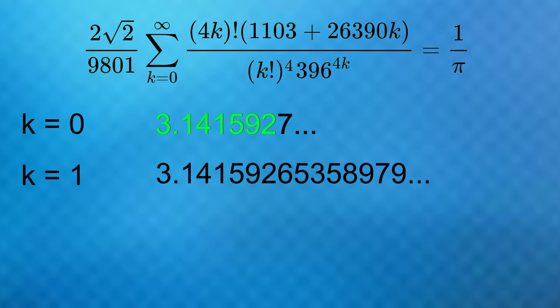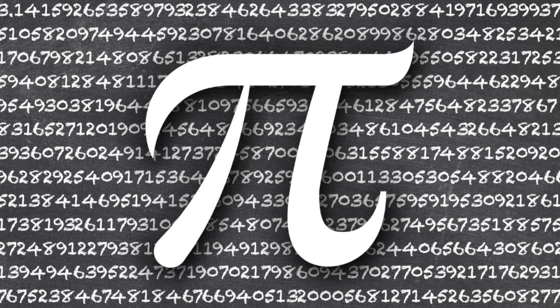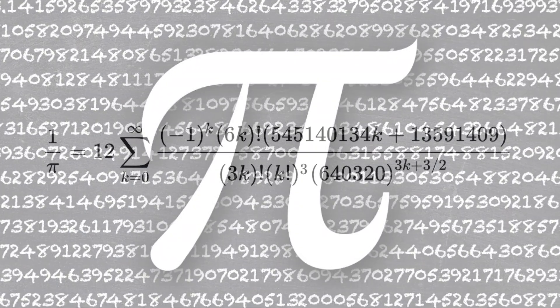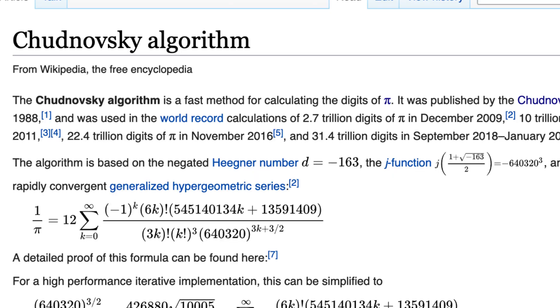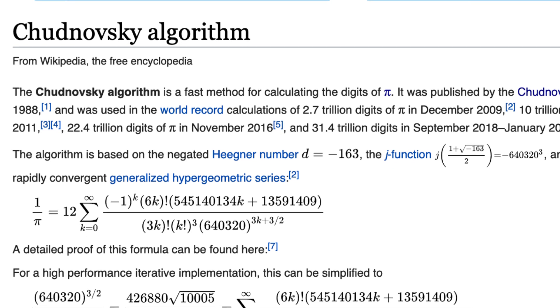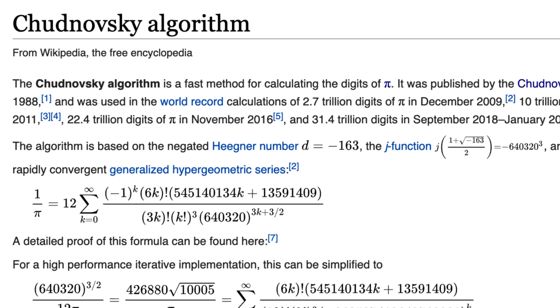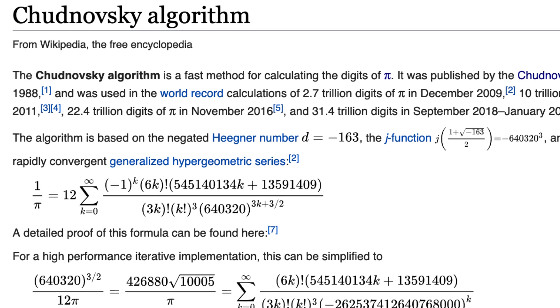And it's formulas like these that we can use to calculate pi to billions or even trillions of digits. In fact, very recently, a similar looking formula known as the Chudnovsky algorithm was used to determine over 30 trillion digits of pi. For this series, after just one term or plugging in k equals 0, you already have pi calculated to 14 digits of precision.